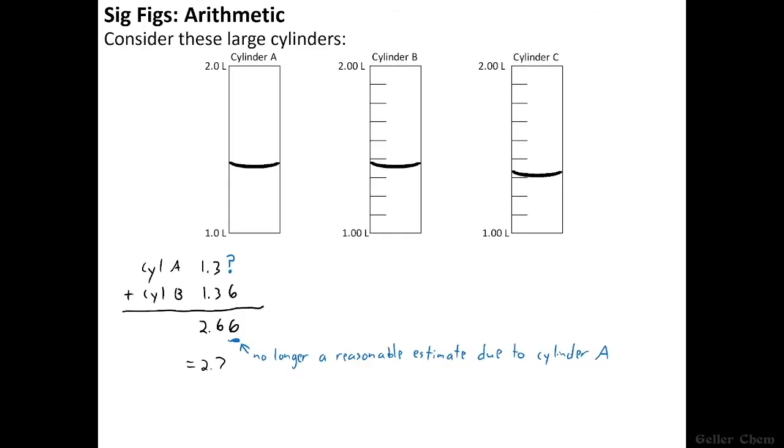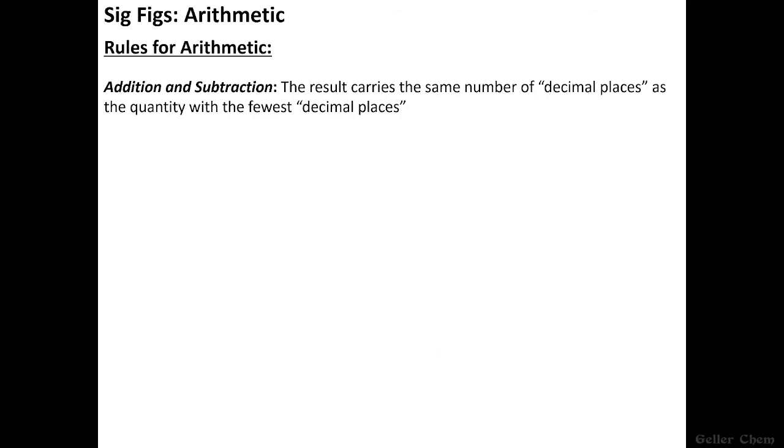So in our previous example, this number was estimated to the hundredths place, but this number could only be estimated to the tenths place, thus the summation of the two can also only be estimated to the tenths place. This number here is estimated to fewer decimal places than this number here. And that is the logic of what I mean when I say fewest decimal places.